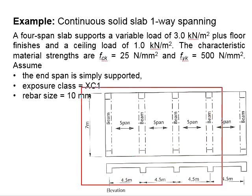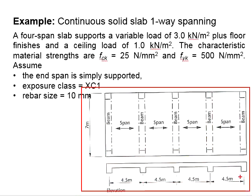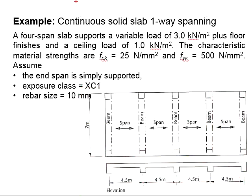The figure here shows a four-span slab which is used to support a variable load of 3 kN per meter square, plus the floor finishes and the ceiling load of 1 kN per meter square. The 3 kN per meter square is QK and the 1 kN per meter square is GK.